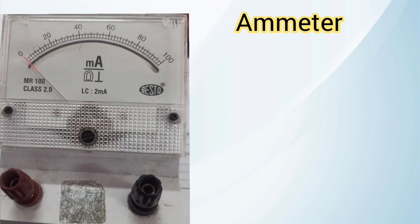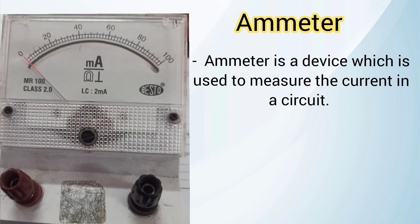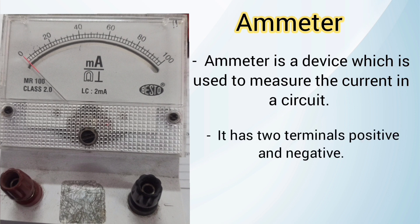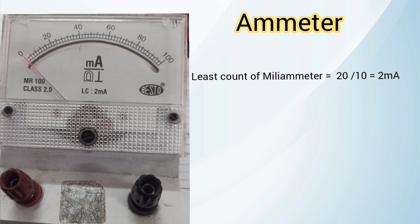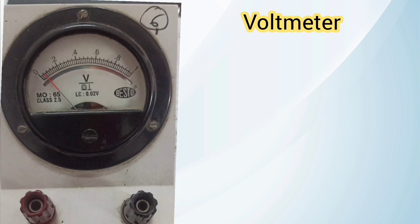The first instrument is the ammeter. An ammeter is a device which measures the current in a circuit. It has two terminals: positive and negative. For the least count of the ammeter, from 0 to 20 it has 10 divisions, so 20 divided by 10 equals 2 milliampere. One division equals 2 milliampere, and five divisions equal 10 milliampere.